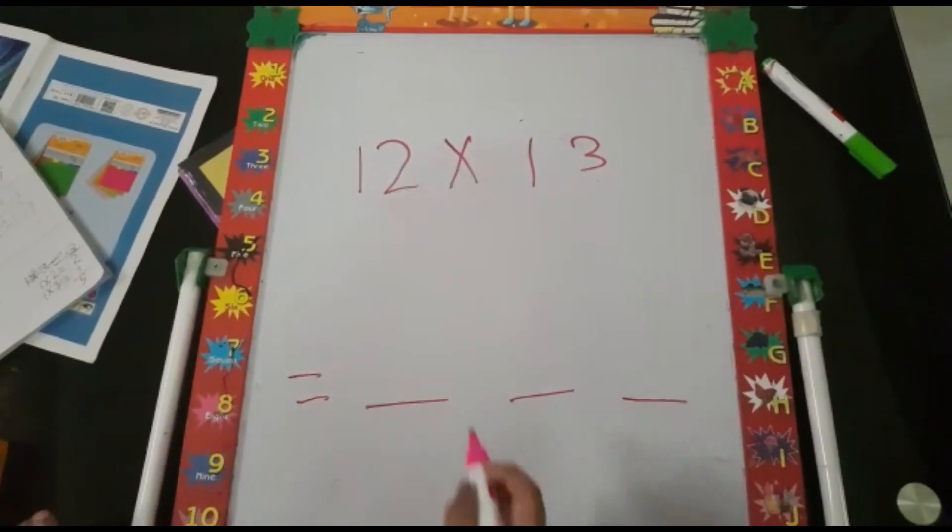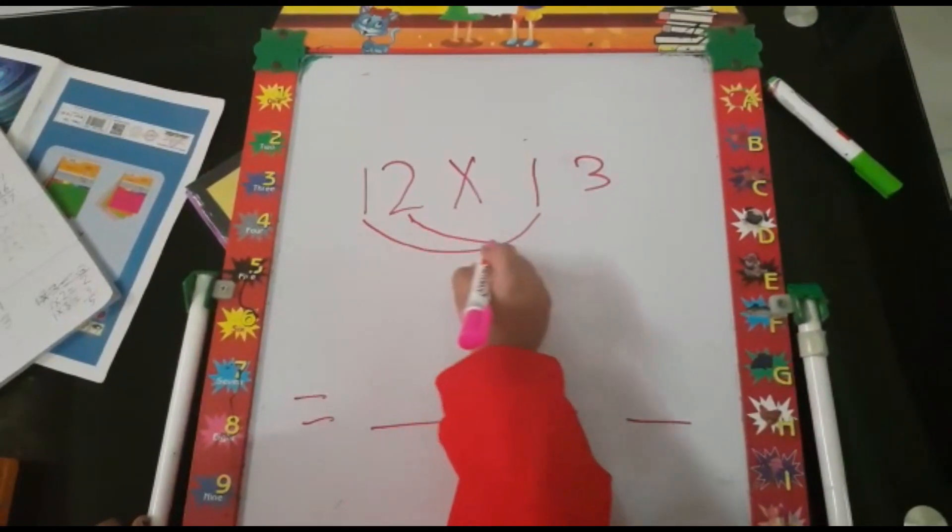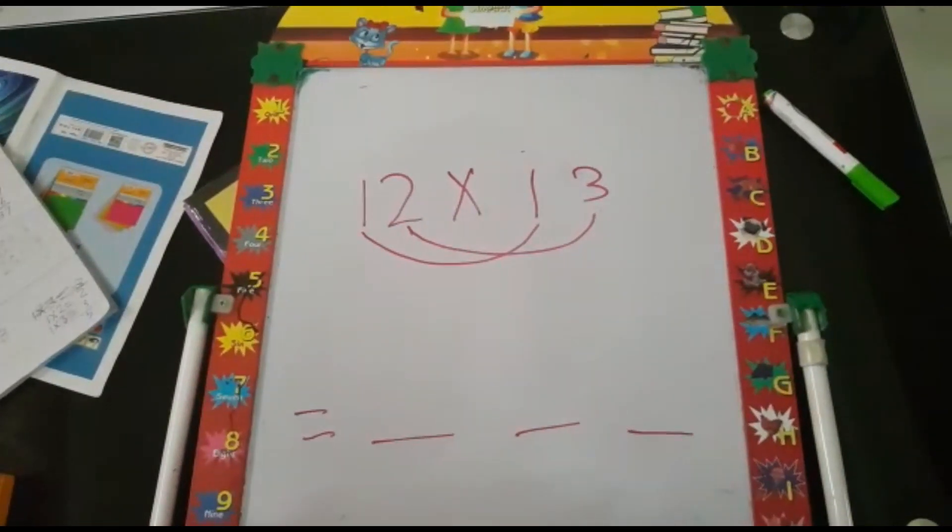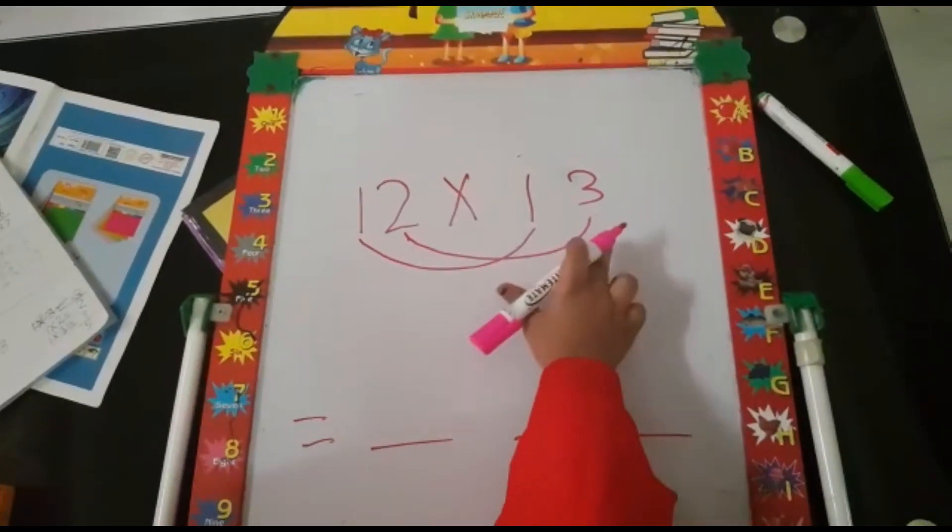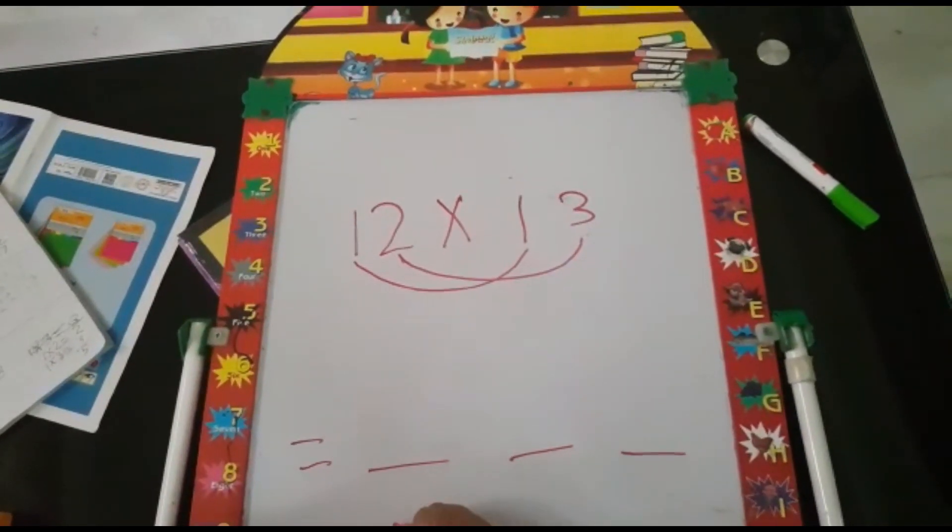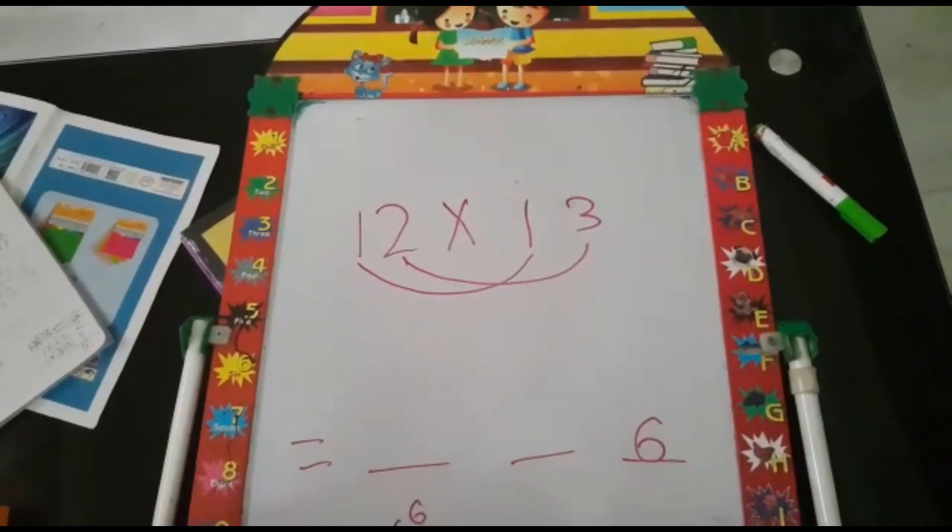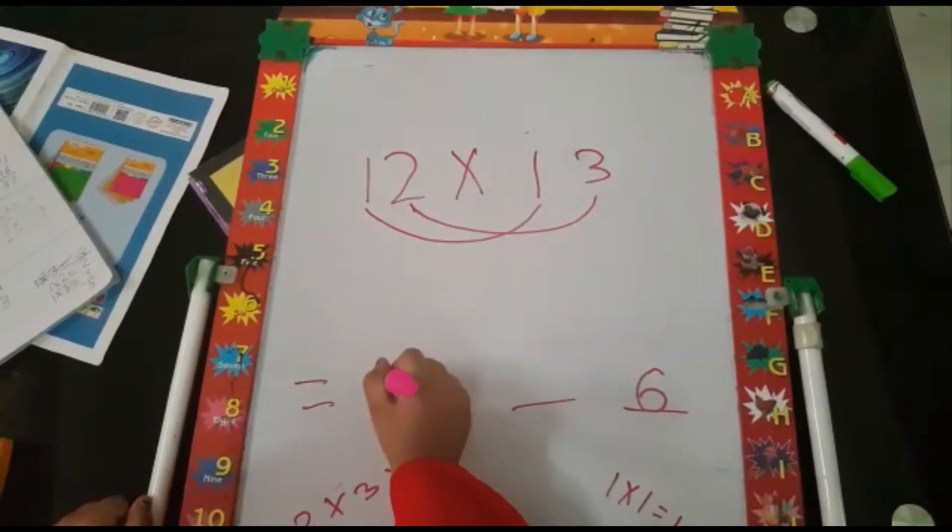Our first step will be a criss cross multiplication, where 2 will be multiplied by 3 and 1 will be multiplied by 1. That is 1s with 1s and 10s with 10s. Our 3 digit are 3.